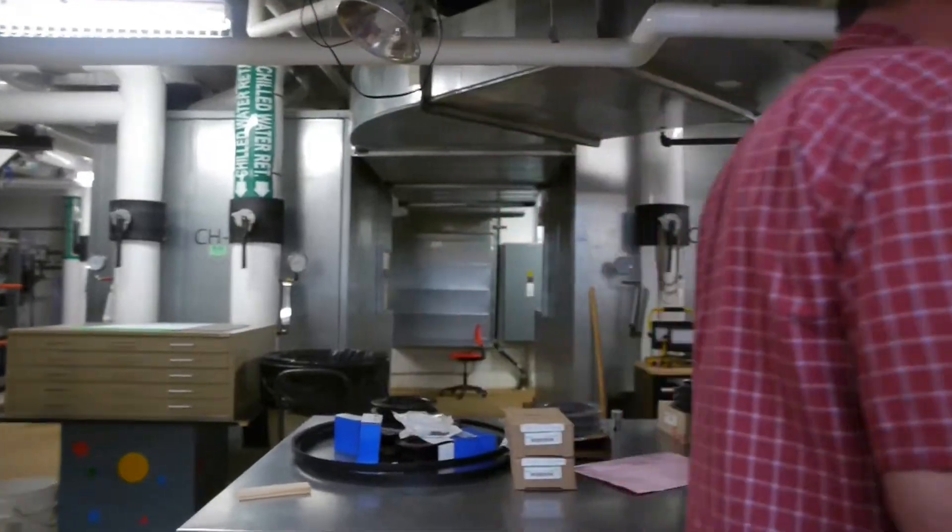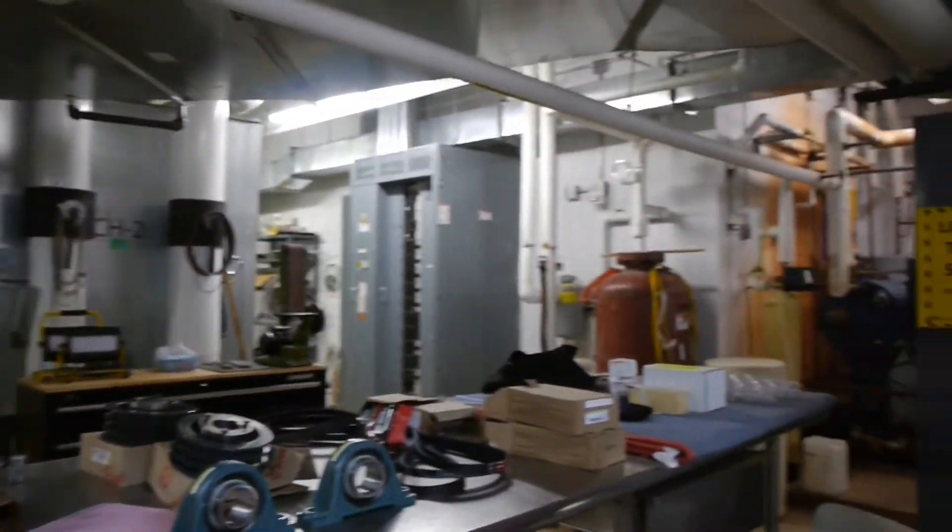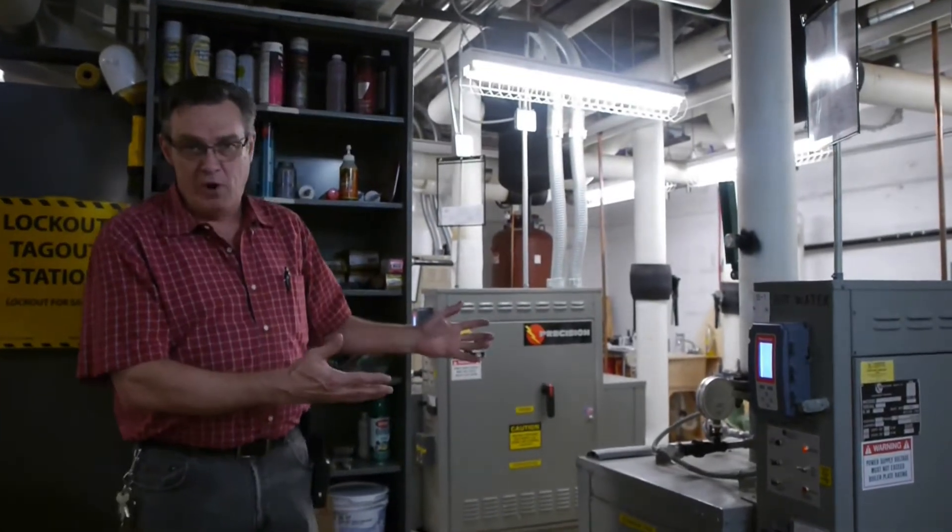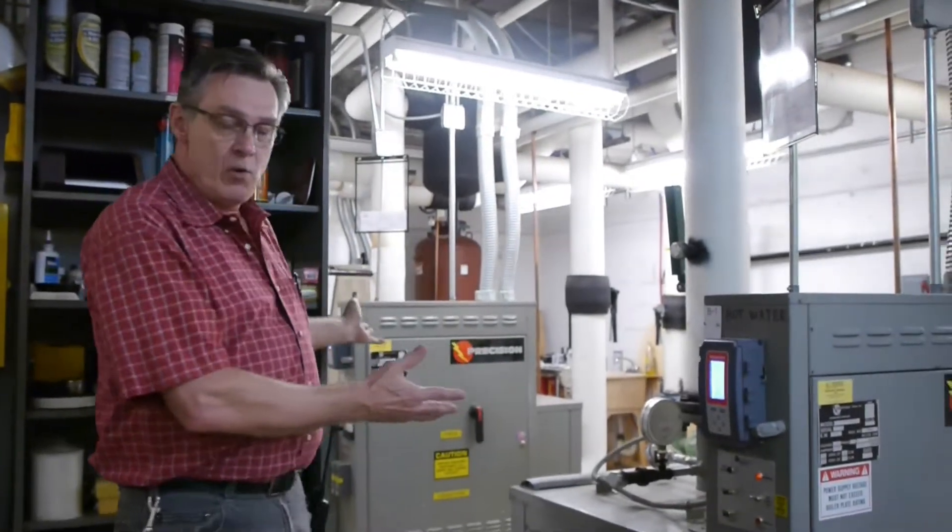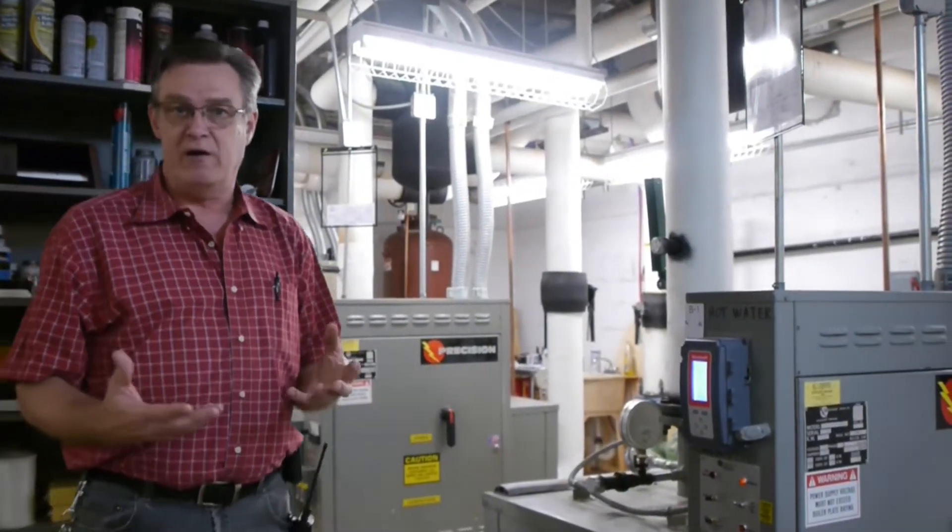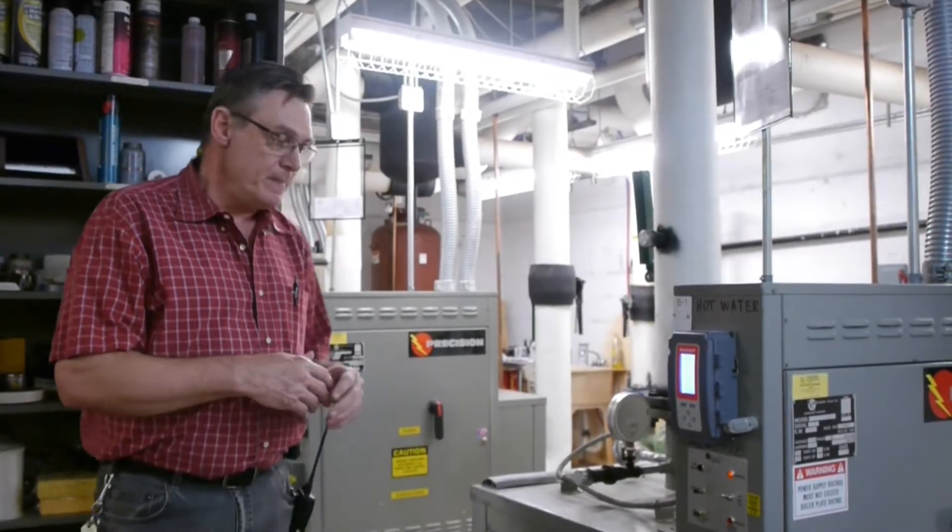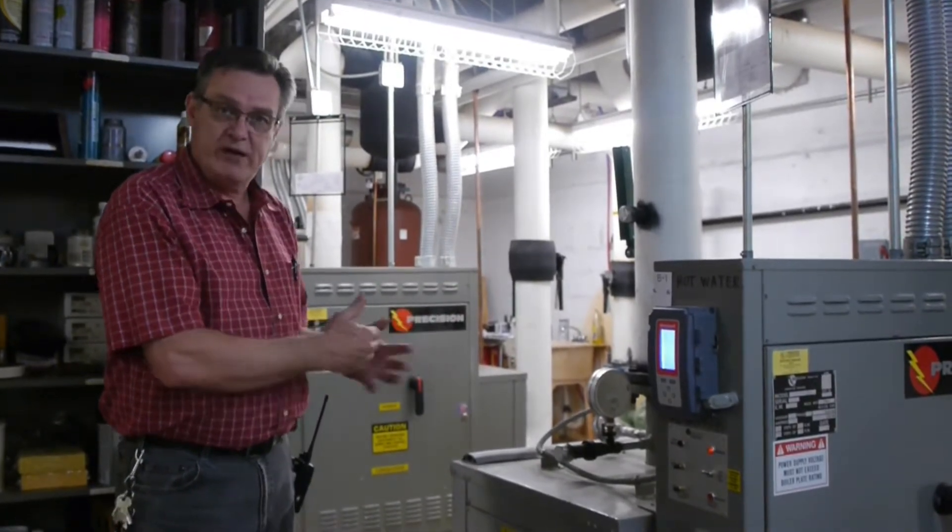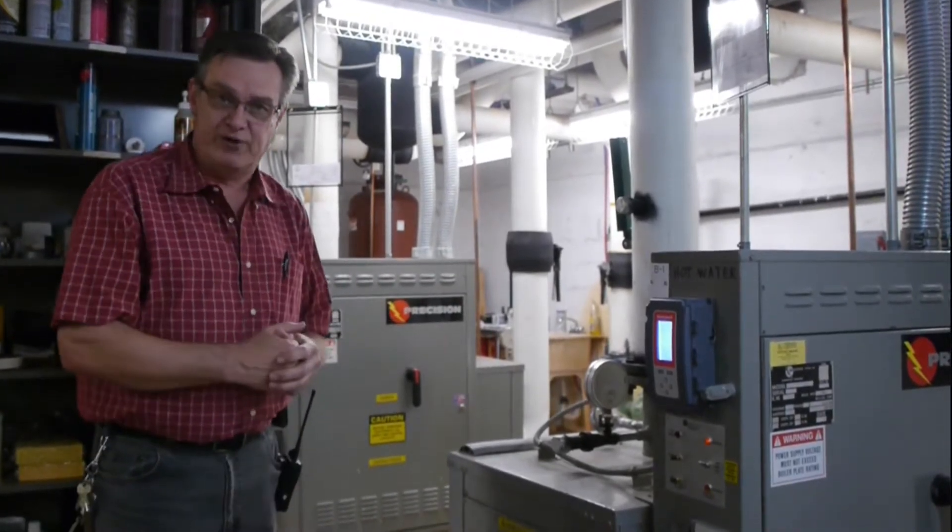Real quick, I'll show you around some of the other equipment. This here is a hot water boiler. We have two hot water boilers that help temper the air throughout the museum. One is the primary, one is the backup. We do rotate these from week to week so that we get the same amount of hours on these.